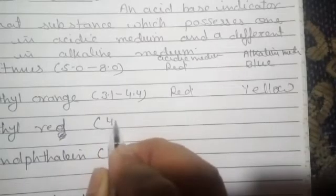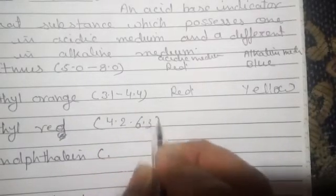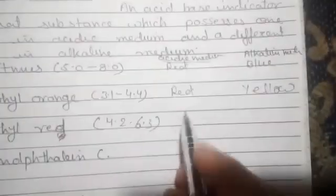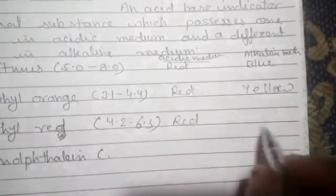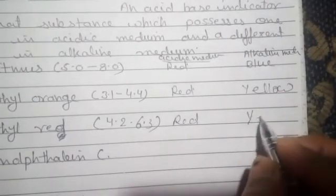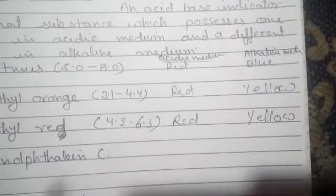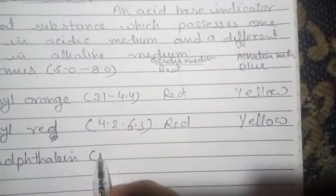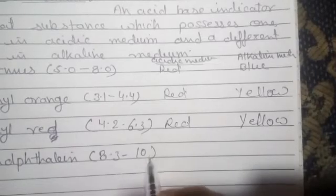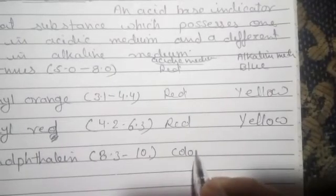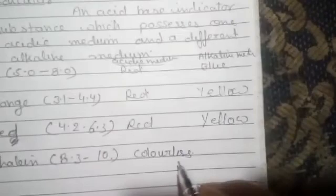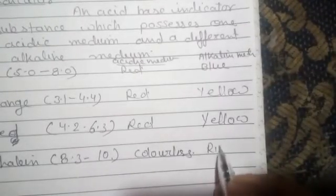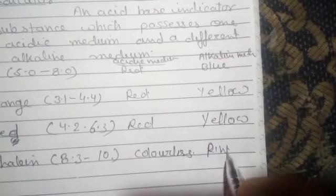The pH range of methyl red is 4.2 to 6.3. In acidic medium it gives red color and in alkaline medium it gives yellow color. Phenolphthalein has pH range 8.3 to 10.0, colorless in acidic medium and pink or red in alkaline medium.